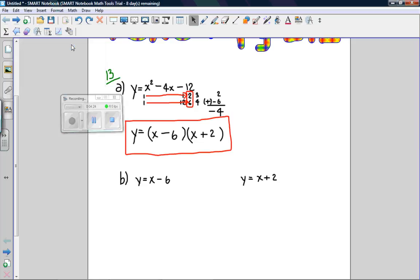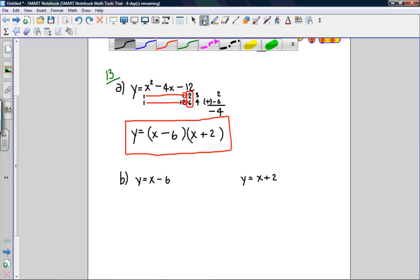13b asks for the x-intercepts of the parabola. What I've done is taken each of the brackets and put them as separate equations. To find the x-intercepts, I'll set y to 0 and then solve for x.